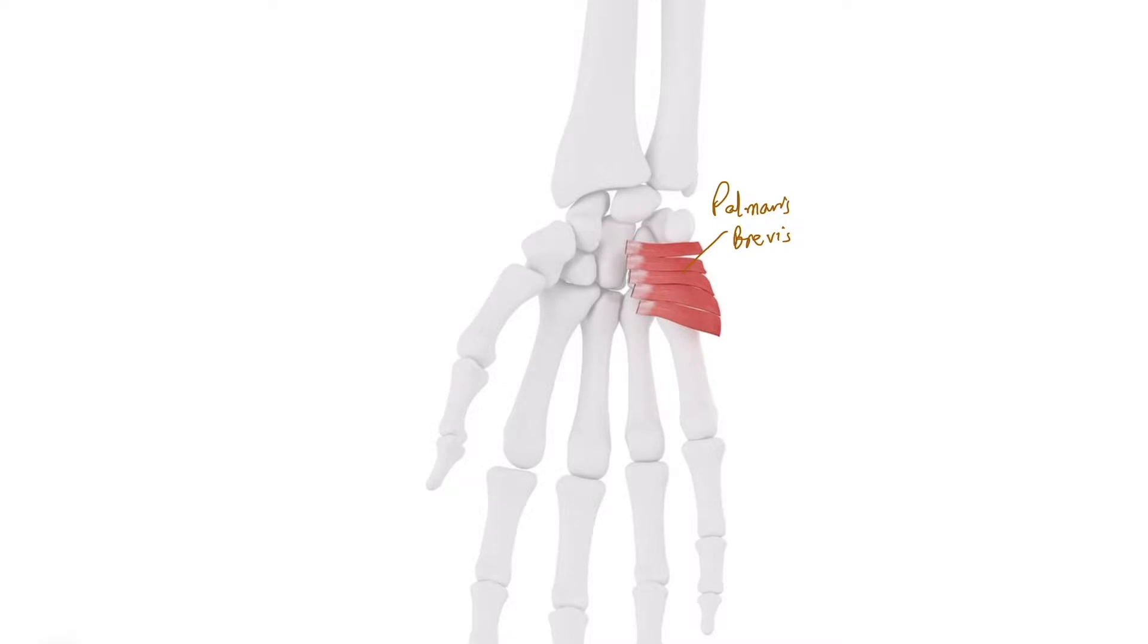This muscle, when it contracts, helps to increase the concavity of the skin on the ulnar side of the palm.